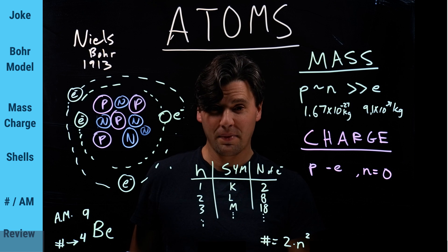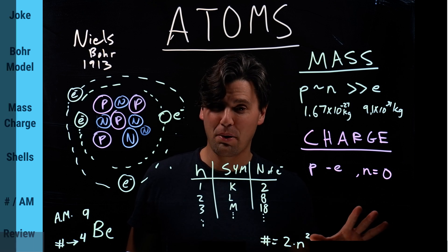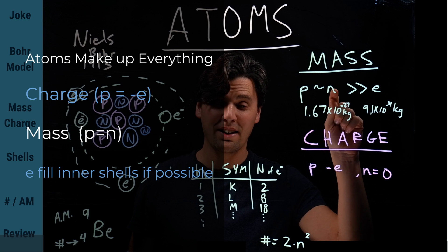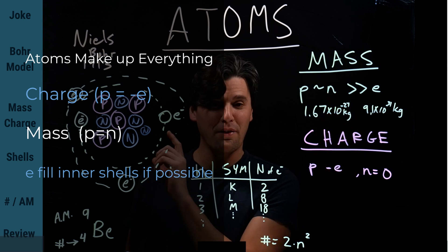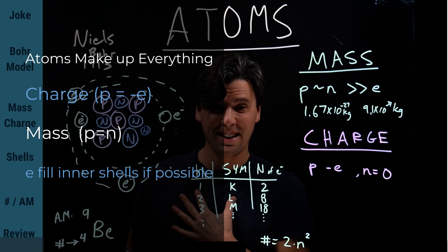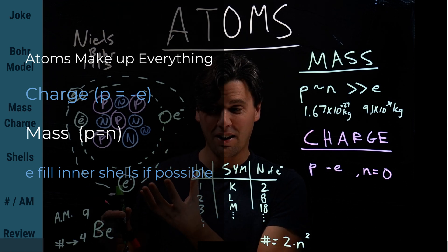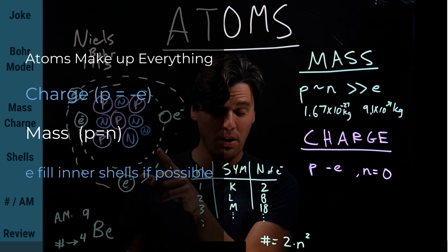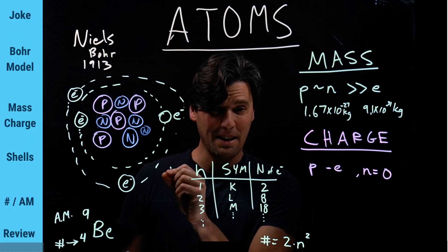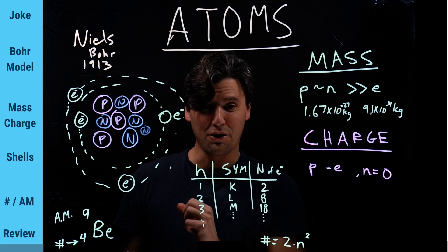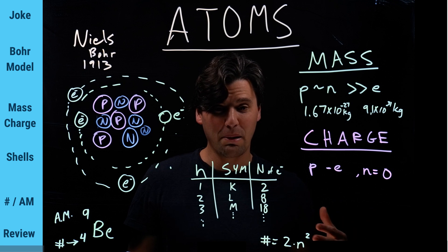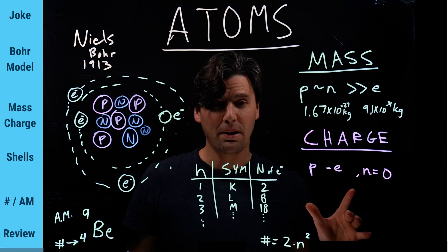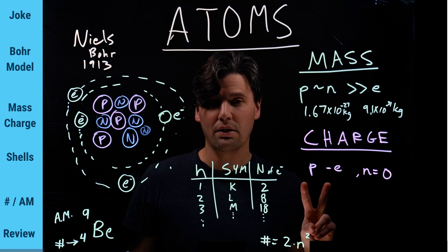So the takeaways for today: atoms make up everything — that's why they're super important. Protons and electrons are the same in terms of charge magnitude. Protons and neutrons are the same in terms of mass. Most of the space in atoms and in our body is actually empty — it's mostly that electron cloud. The inner shells are more stable and the outer shells are less stable, so electrons prefer to get to those inner shells if possible. Now that you know this basic information about atoms, check out our next video about photoelectric and Compton interactions.